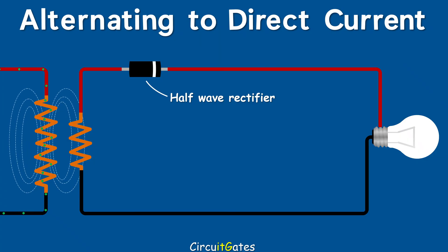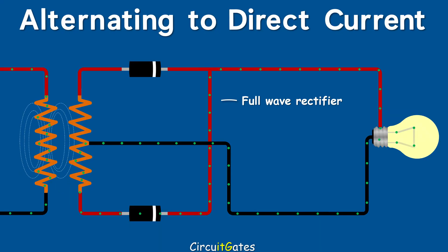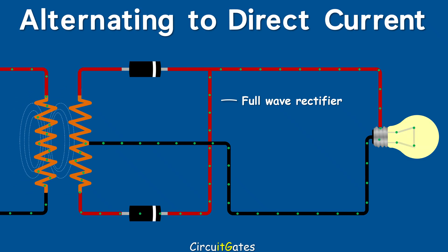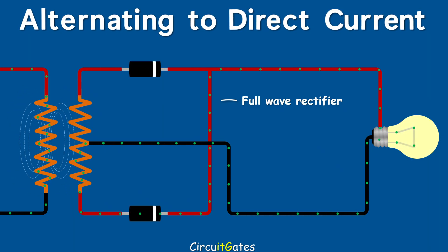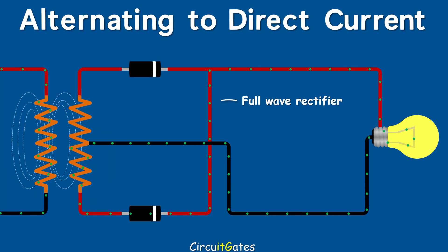A full-wave rectifier uses two diodes connected to the secondary side of a center-tapped transformer. When AC flows in the first direction, one diode is forward biased and current flows through the load. When AC changes direction, the other diode is forward biased and current flows through the load. Let us use a bridge rectifier as our rectifier.